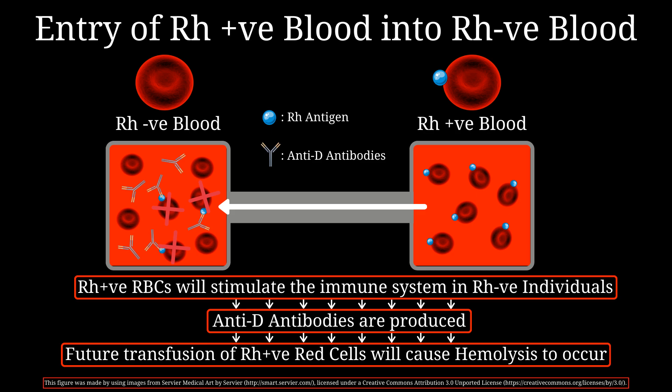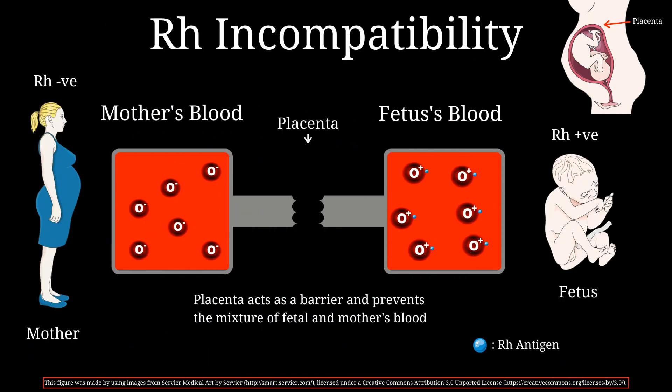Now let's go back and see how this relates to erythroblastosis fetalis. In a pregnant mother, the placenta normally acts as a barrier and prevents the mixing of blood between the mother and her fetus. In our case this can ensure that the fetus's blood, which is RH positive, will not enter the mother's circulation, so no anti-D antibodies will be produced.